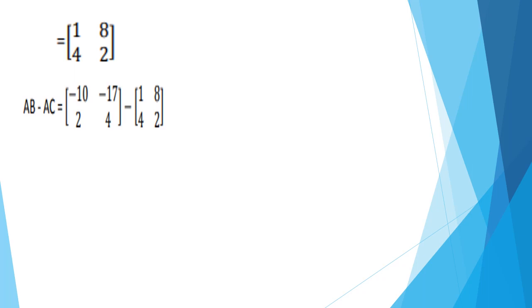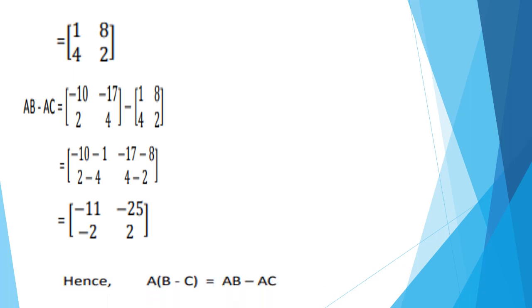This matrix is AB and this one is AC. Subtract each corresponding element: minus 10 minus 1 equals minus 11; minus 17 minus 8 equals minus 25; 2 minus 4 equals minus 2 because 4 is the bigger number so the greater value has negative sign; 4 minus 2 equals 2. Now check both results: A into (B minus C) and AB minus AC both have the same results, so left hand side equals right hand side.